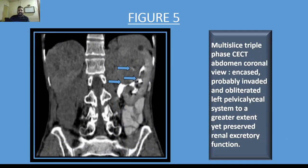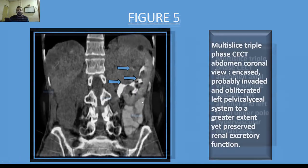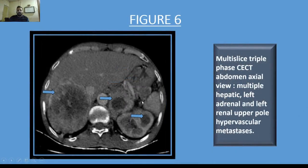The left pelvicalyceal system is significantly encased, probably invaded and obliterated to a greater extent, resulting in reduced renal excretory function as seen here. Multiple hepatic, left adrenal, and left upper pole of kidney hypervascular metastases are also identified.